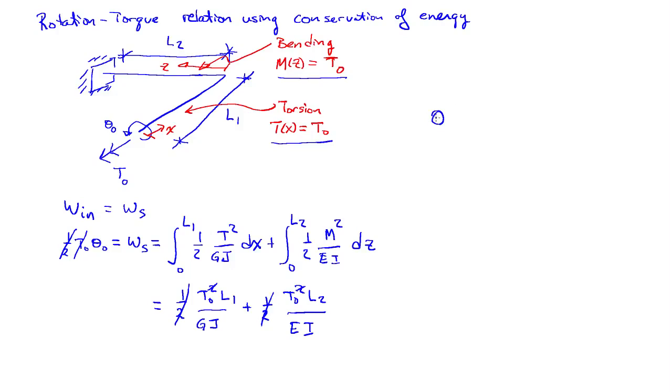I come to a final result that the rotation, theta naught, is equal to T0 times L1 over GJ, plus L2 over EI.